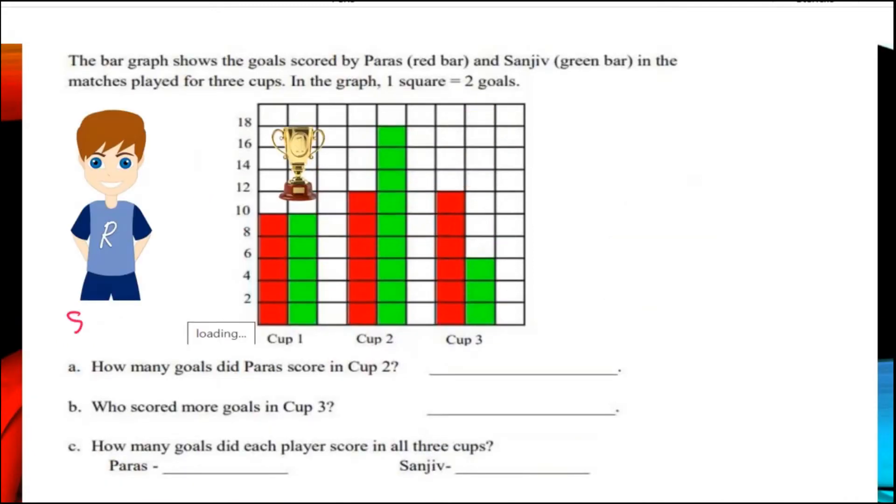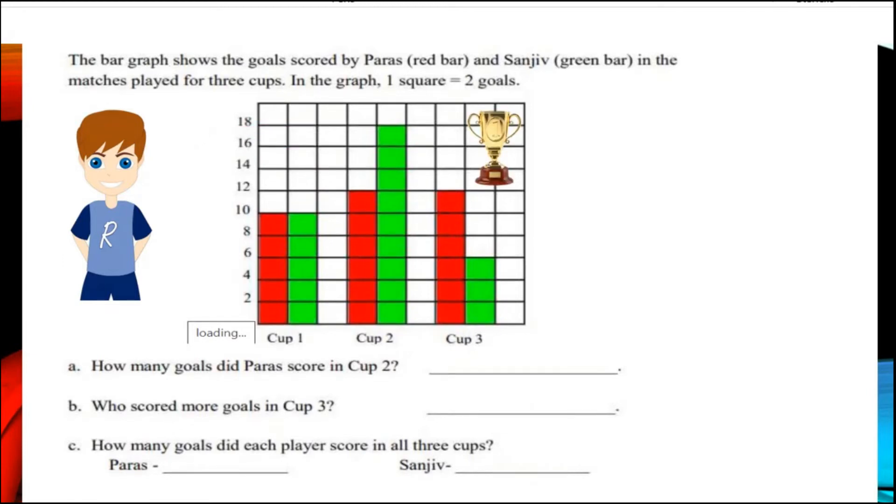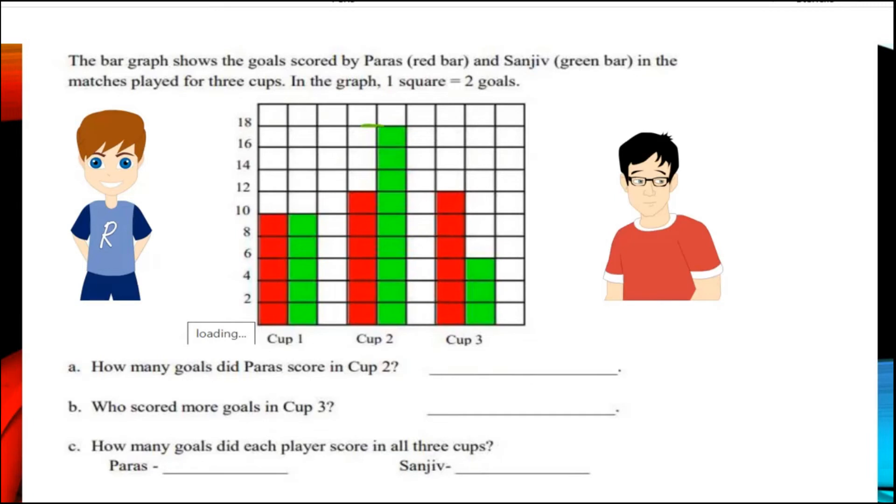So children now let us see how much Sanju achieved. In the first cup he achieved 10 goals, in the second cup he achieved 18 goals, and in the third match he achieved 6 goals only. So children we will try to list out all the goals which are achieved by Paras and Sanju.